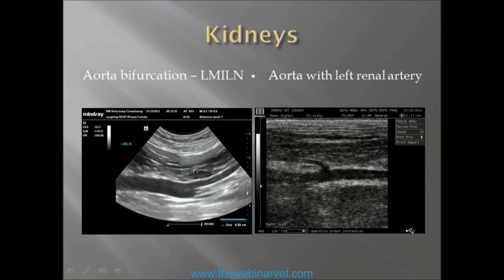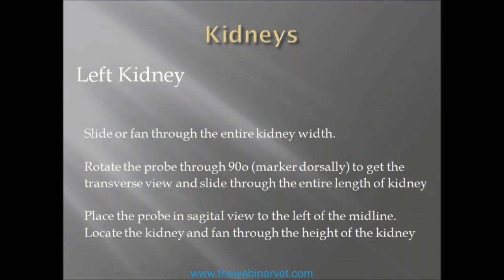You then slide or fan through the entire kidney width. Rotate the probe through 90 degrees with the marker dorsally to get the transverse view and slide through from cranial to caudal. Then place the probe in sagittal view on the body to the left of midline, locate the kidney, and fan through the height of the kidney.